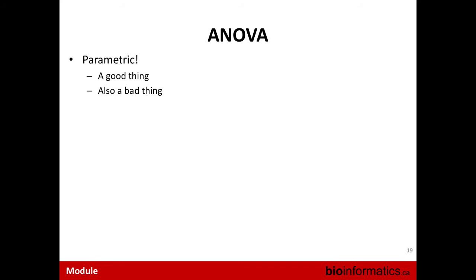Why are parametric methods good? By fitting your data to a statistical distribution, you potentially gain more power to infer statistically significant effects, because you're not limited by the number of samples you have — you've mapped them into a space where you effectively have an infinite number of samples. Why are they potentially bad? There are distributional assumptions that are often disregarded, because you're fitting to a distribution and you need to check that the fit makes sense.